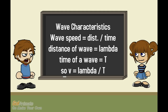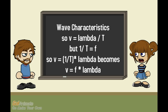We can define the speed of a wave just like any other speed. We need a wave distance — we'll use the wavelength — and a wave time — we'll use the period. Speed equals distance over time, so for a wave, speed equals wavelength divided by period. But since frequency is 1 divided by the period, we can substitute into this equation to get: wave speed equals frequency times wavelength.